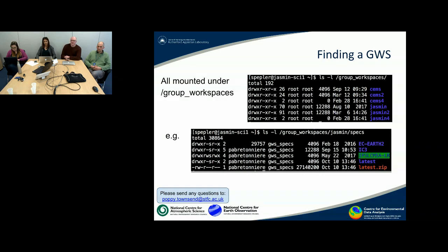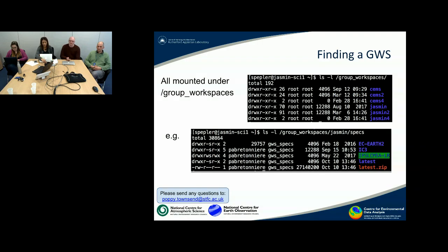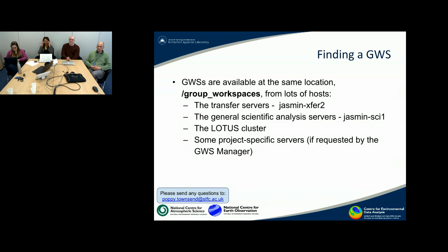Those sections basically conform to generations of Jasmine hardware that have been added, which is probably less significant. Eventually you get down to the actual group workspaces themselves. There's an example of one labeled 'specs' here, which is under slash group workspaces slash Jasmine slash specs — basically just an area for a particular project to do its work, with no real rules about what goes in there. One key thing we do to make things easy is we always mount these group workspaces under the same location on all machines — always slash group workspaces slash Jasmine slash specs.